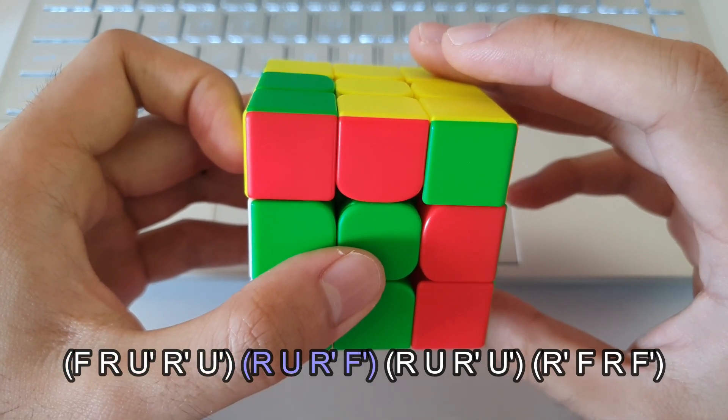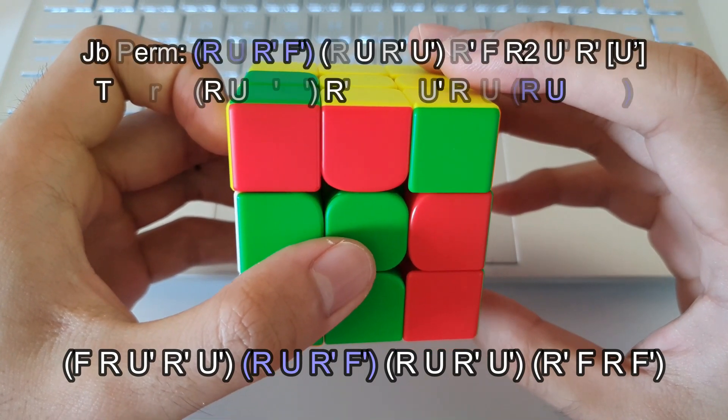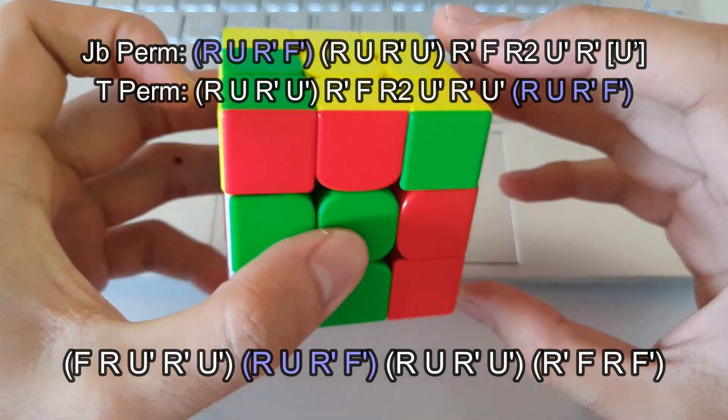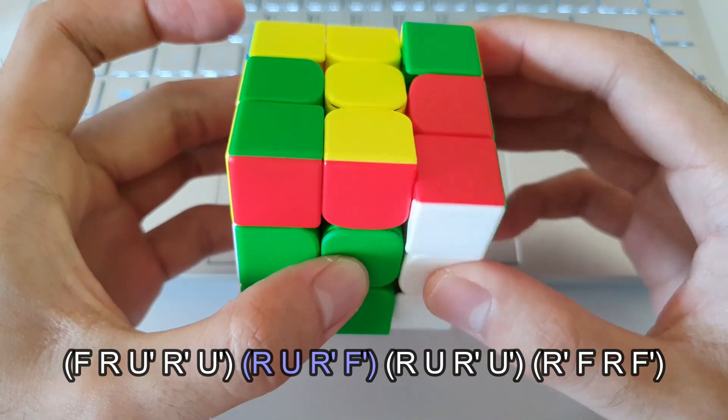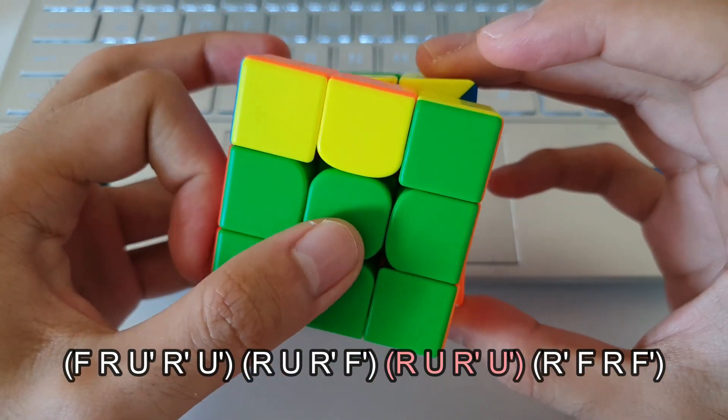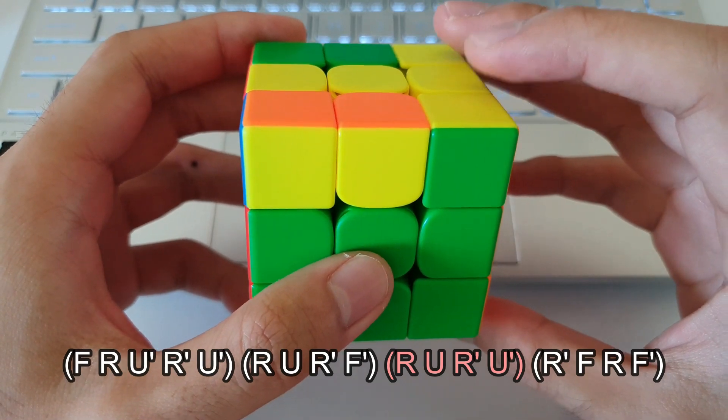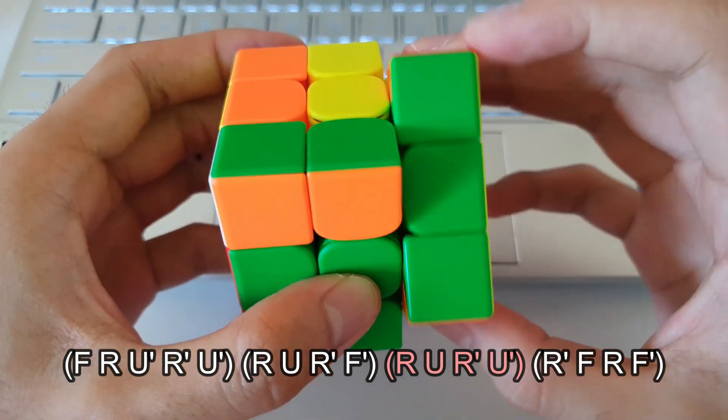The next four moves, you should recognize if you've learned the T-perm or the J-perm before. It's actually the first four moves of the J-perm. Or you can think of it as the last four moves of the T-perm. So quite a common trigger. R, U, R', F'. The next trigger, you guys should definitely know by now. It is called the Sexy Move. It's just R, U, R', U'.